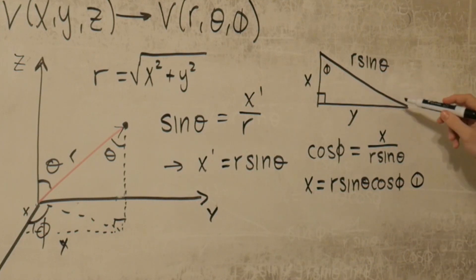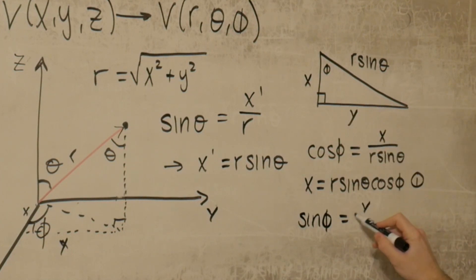The next thing we can do is also in this triangle, and we can just find out what the sine of phi is. If we do that, we see that sine of phi is equal to y over r sine theta. Little algebra lets us know that y is equal to r sine theta sine phi. There's number 2.